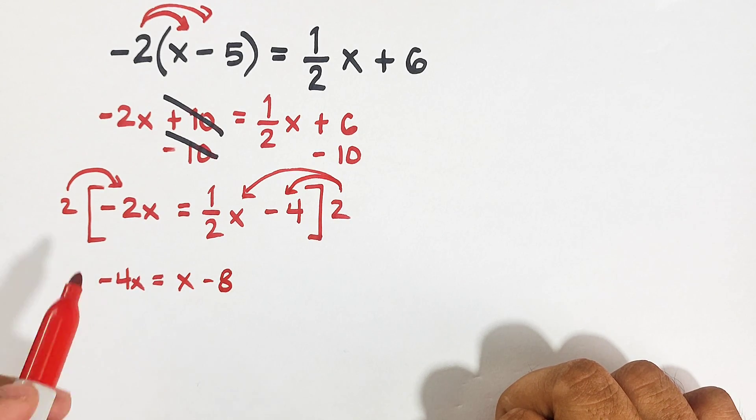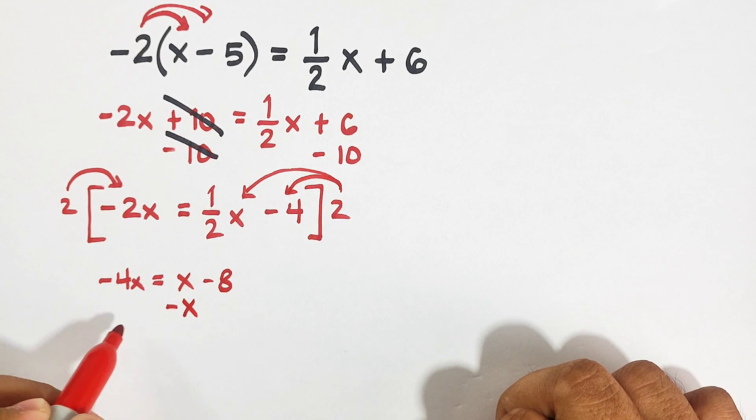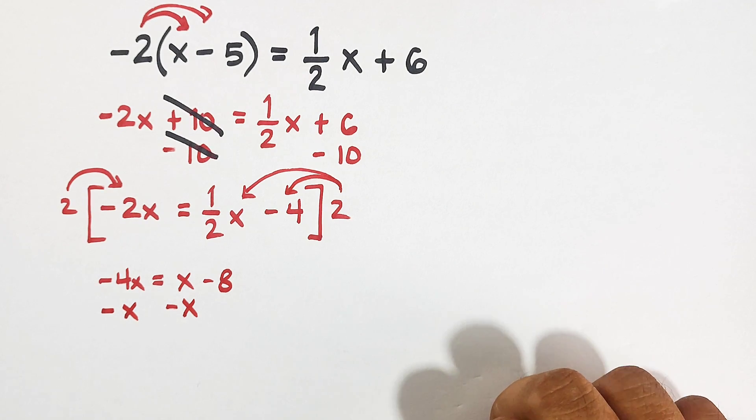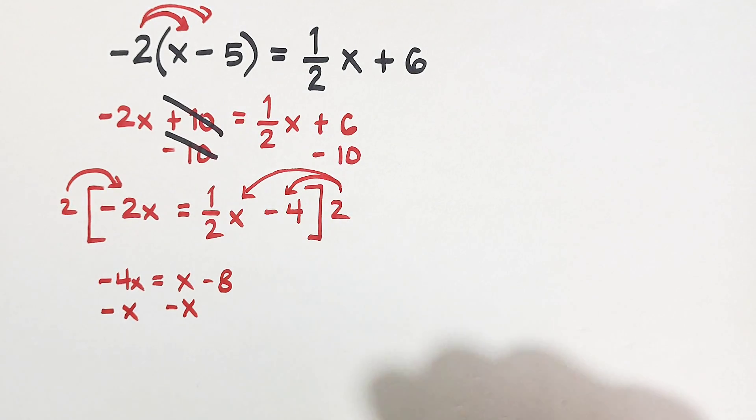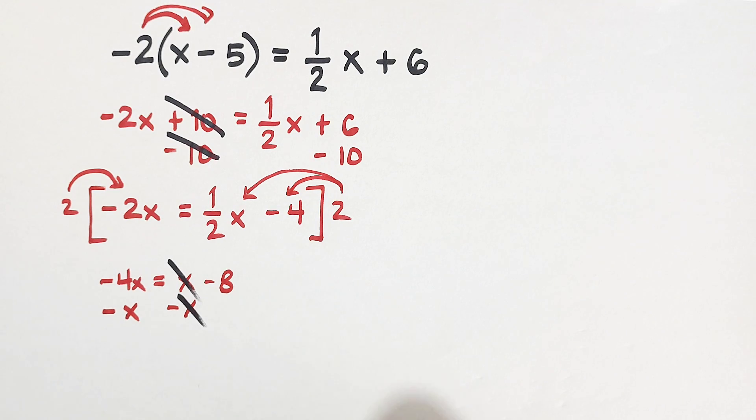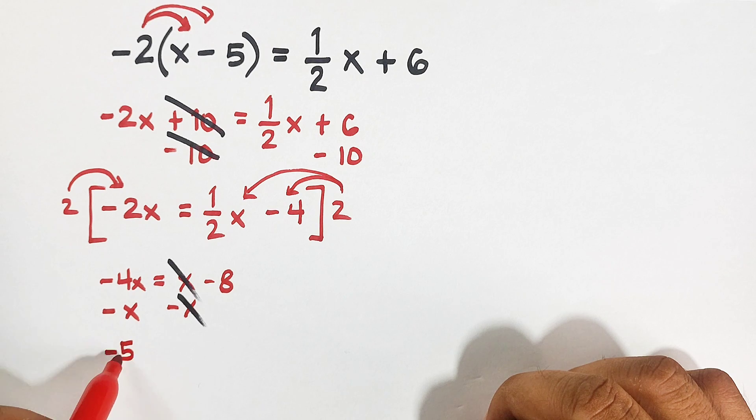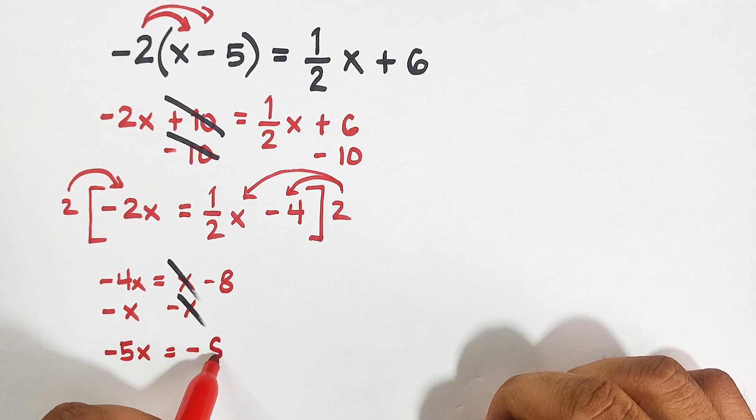So our next target is to remove this x here. To remove that, what we need is to subtract both sides of the equation by x. So as you can see, this will become 0. And on the left side, negative 4x minus x is negative 5x. Then copy negative 8.